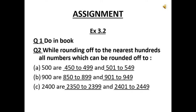The numbers that round off to 500 are 450 to 499 and 501 to 549. The numbers which can be rounded off to 900 are 850 to 899 and 901 to 949. The numbers which can be rounded off to 2400 are 2350 to 2399 and 2401 to 2449.